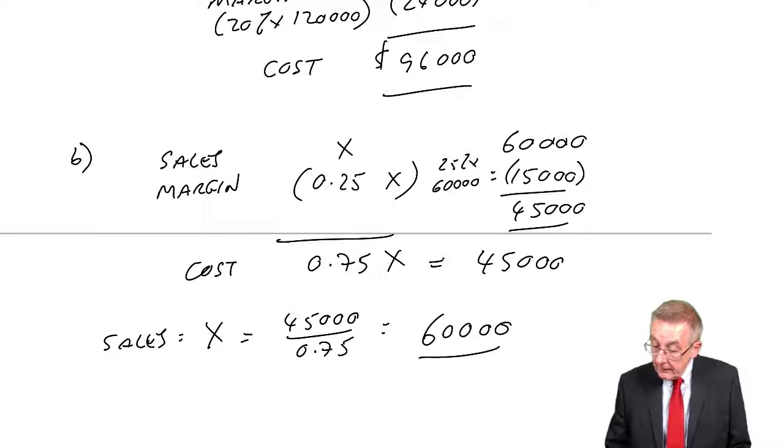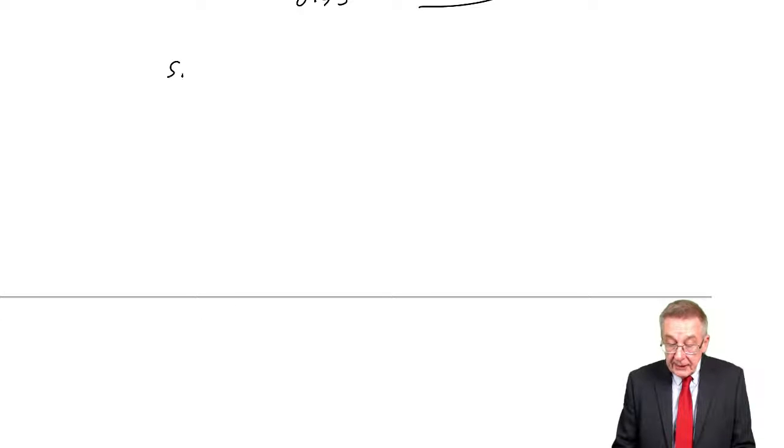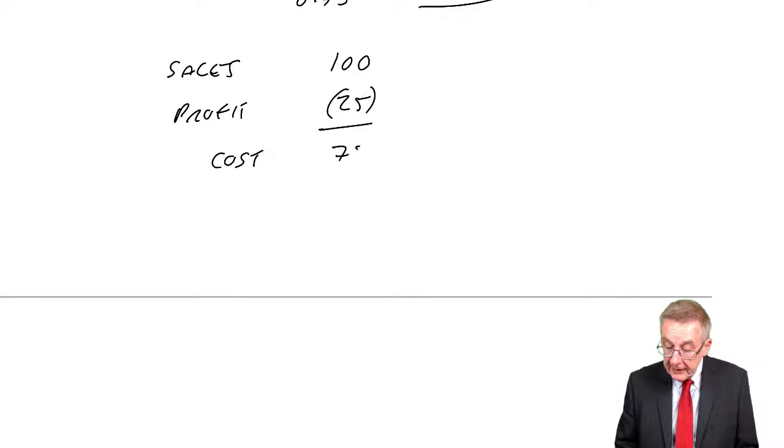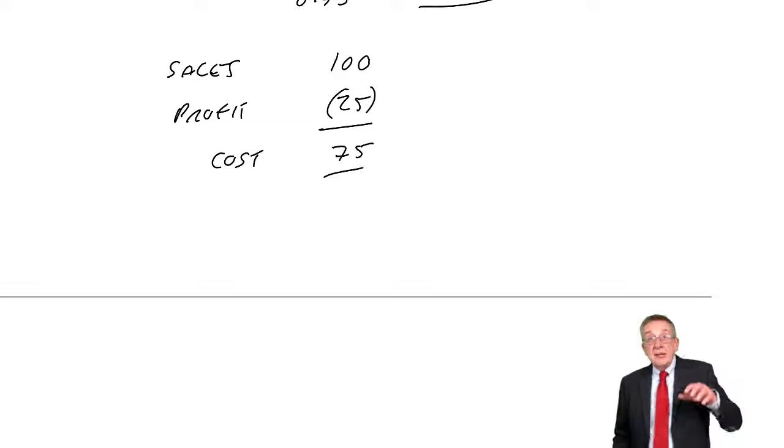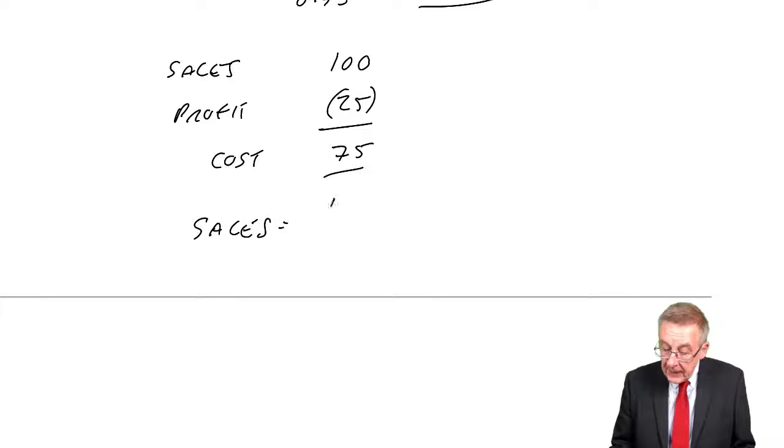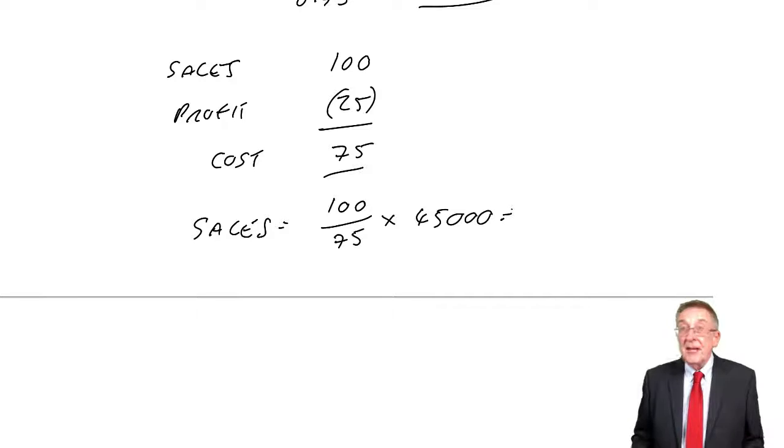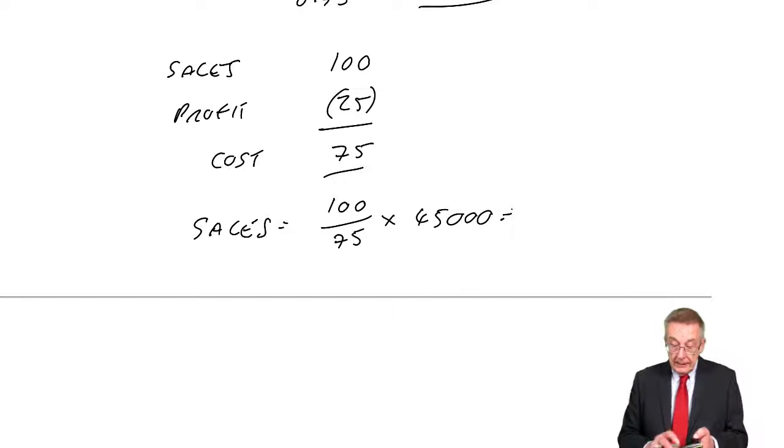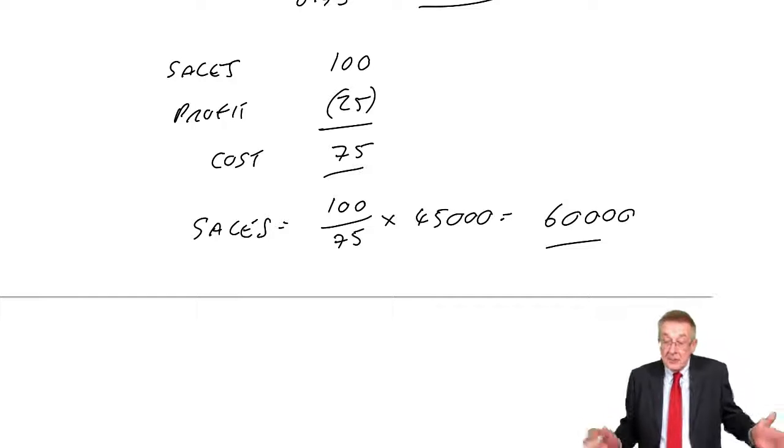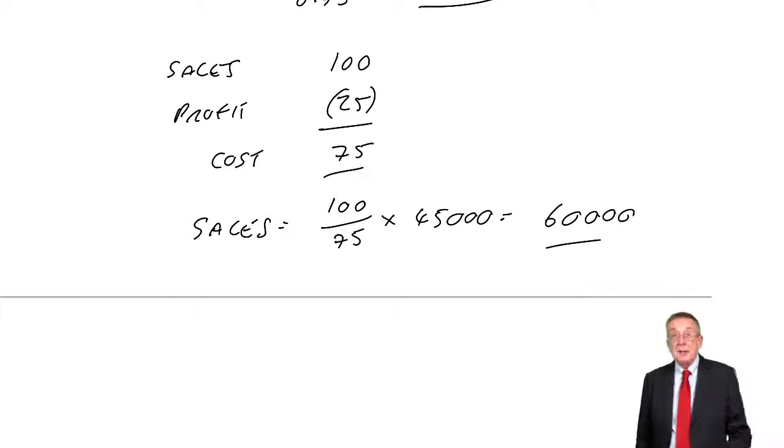If you don't like using X's, then say for every 100 sales, the profit, the margin, 25% of sales, which is 25, the cost will be 75. And therefore, for every 75 cost, the sales will be 100. So the sales will always be 100 for every 75 of the cost. Cost is 45,000, and 100 divided by 75 times 45,000 is 60,000. Learn the words, then it's just practice. It's when you're going fast you make silly mistakes, so obviously do practice.